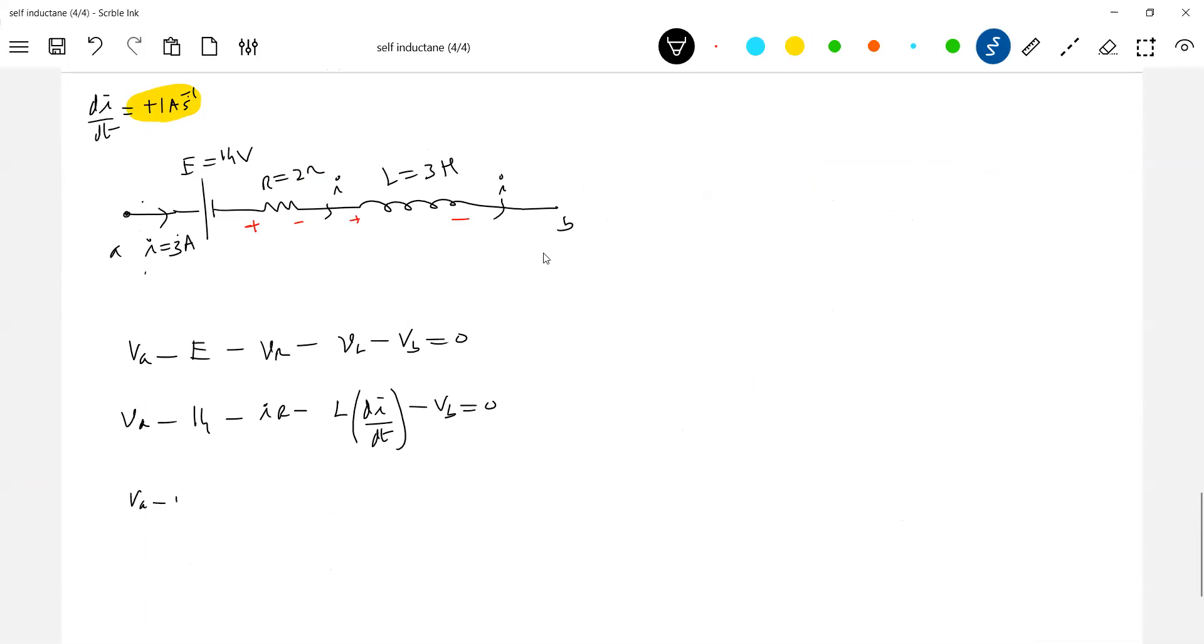So let me substitute with sign. VA minus 14, what is the current? Three into two, the value of this is plus one. Sign is very important. If current across the branch increasing, Di by dt positive. So what is the drop across the inductor? L into Di by dt.